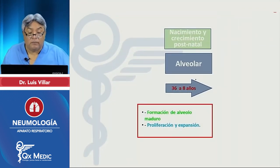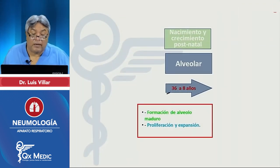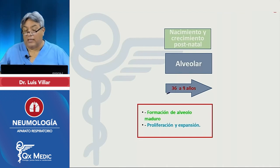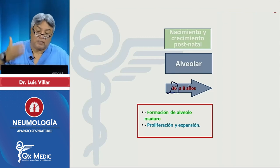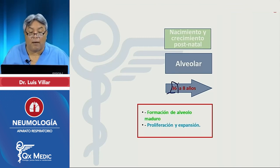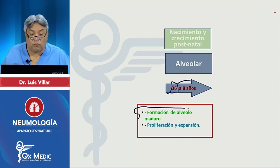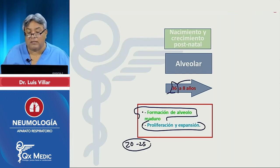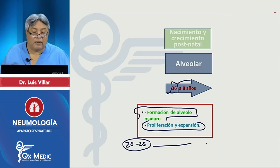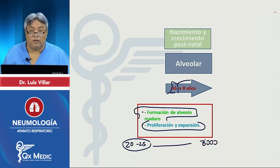Ya en la etapa alveolar, desde la semana 32 — idealmente desde la 36, cuando empieza el periodo de feto viable — hasta los 8 años, los alveolos se forman maduros, proliferan y se expanden. El niño nace con 20 a 28 millones de alveolos para terminar el adulto con 300 millones.